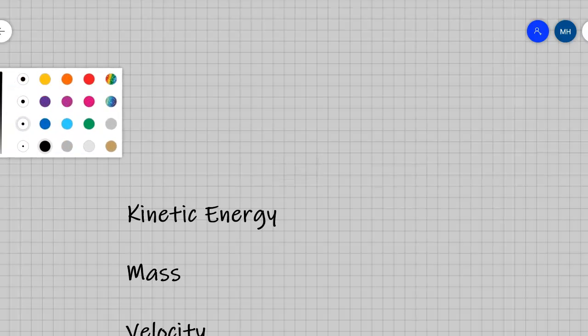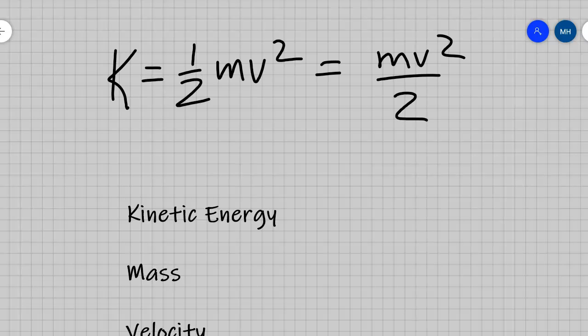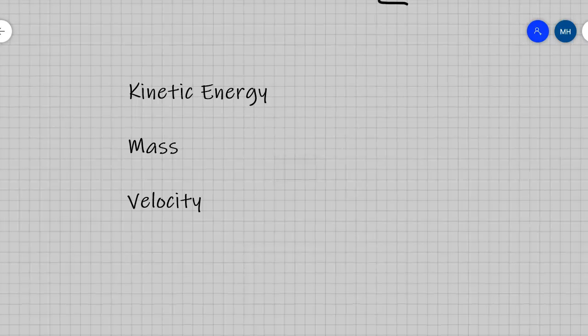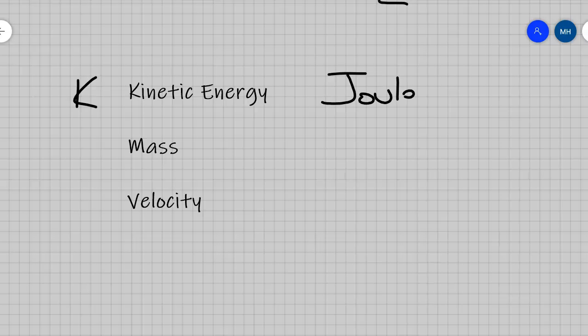The formula for kinetic energy is K equals one-half mv squared, which is mv squared divided by 2. We have K, which means kinetic energy, measured in joules. M is for mass, measured in kilograms, and v is for velocity, measured in meters per second.